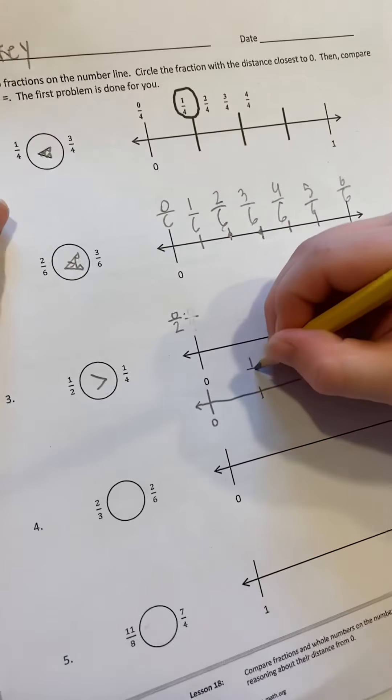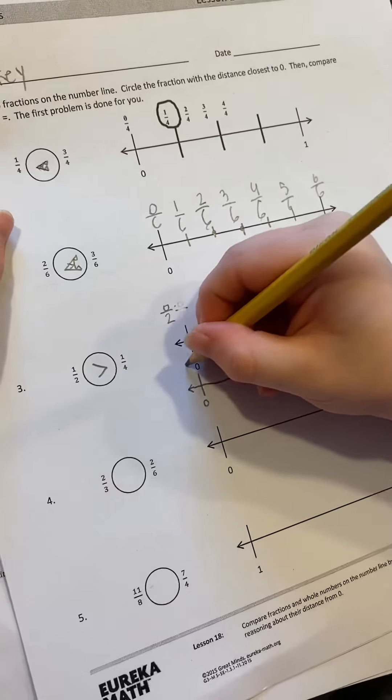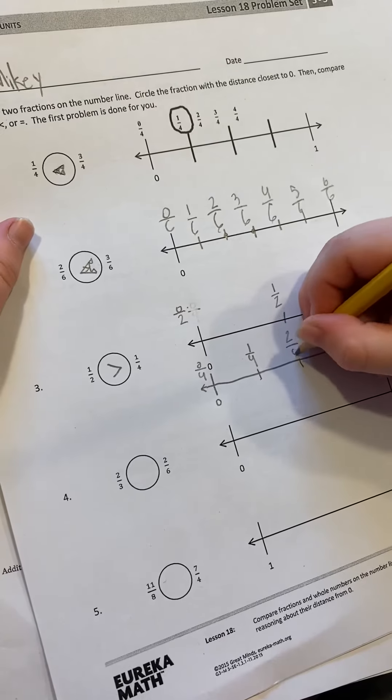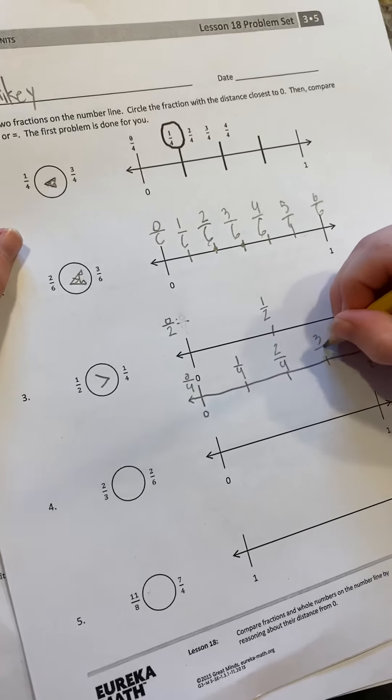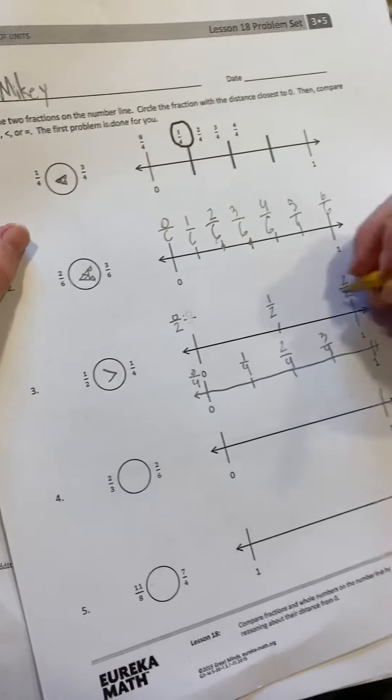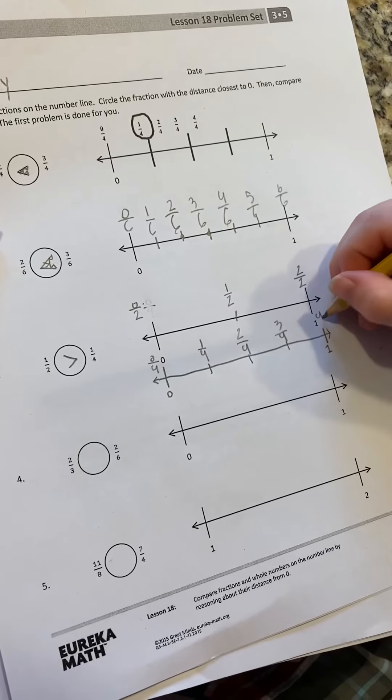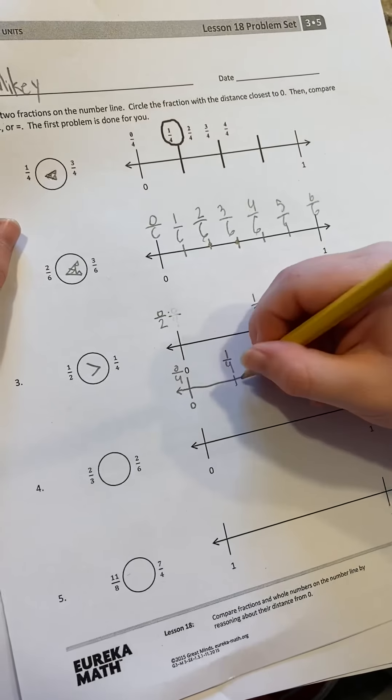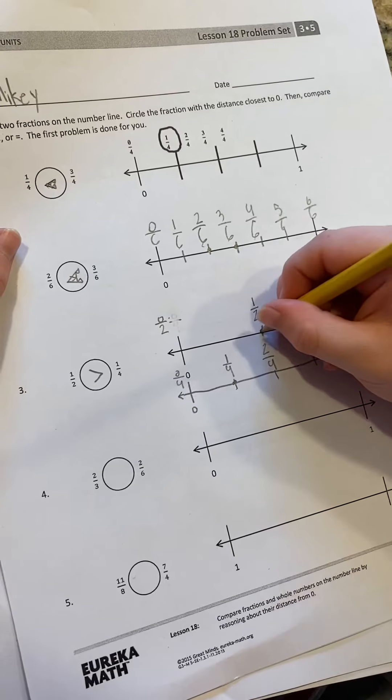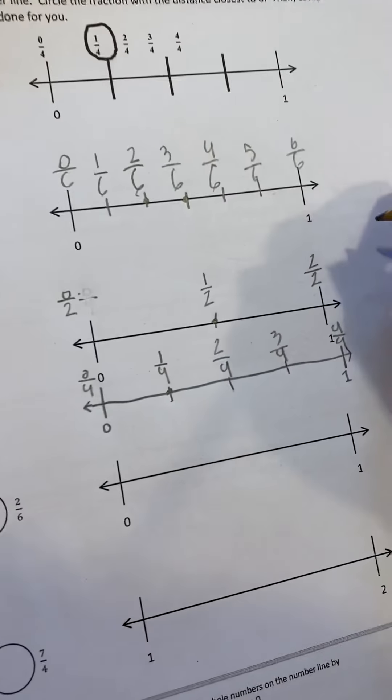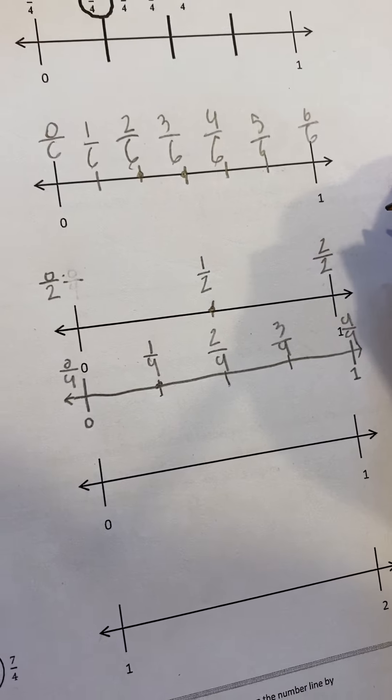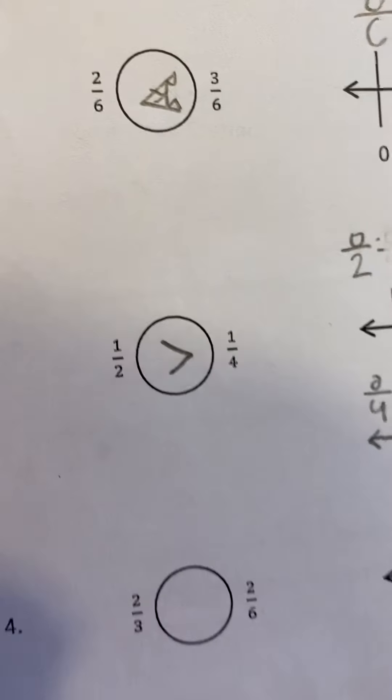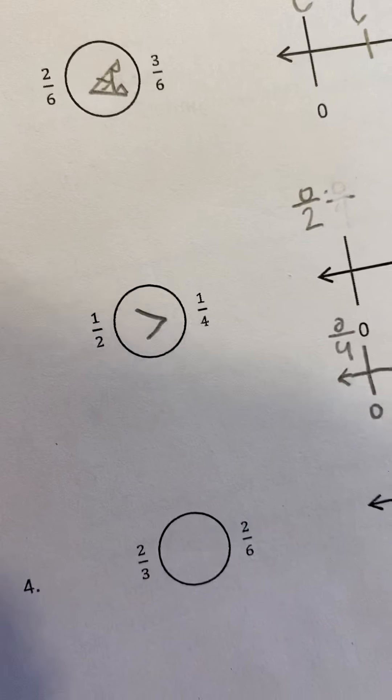And now, let's create some fourths on the bottom part of the number line. Now, this time, Mikey is making a number line with fourths, so we don't have to use the same number line. Although, you could put both on the same number line if you wanted to. So he's got a number line between zero and one. Now, this time, it's in fourths. So he's going to label one-fourth, two-fourths, which, wow, is equal to one-half, looks like, doesn't it, Mikey? Mm-hmm. Same spot on the number line. And four-fourths.